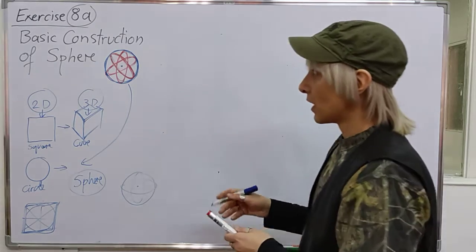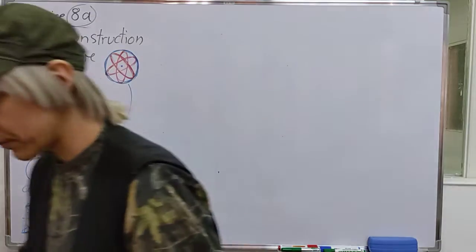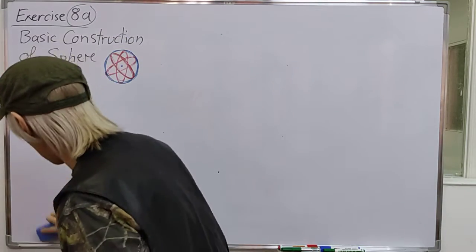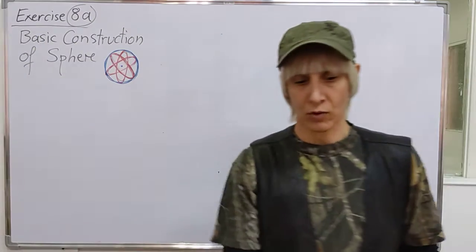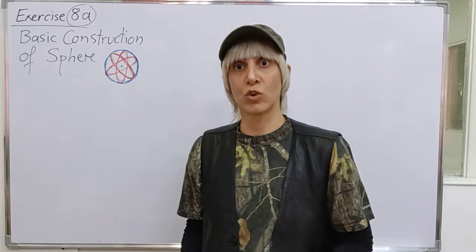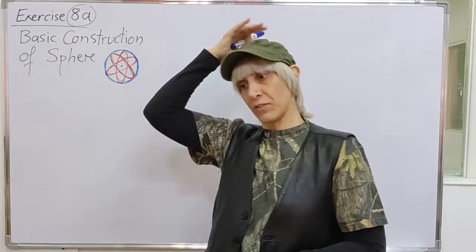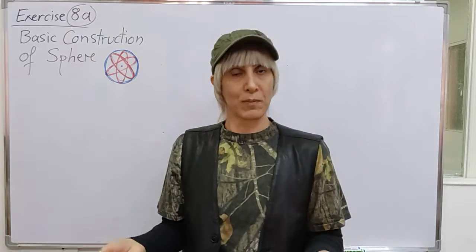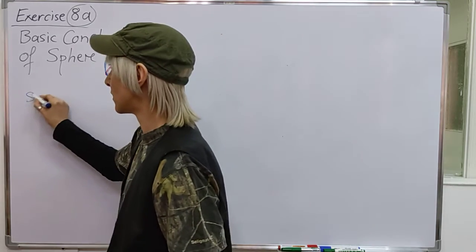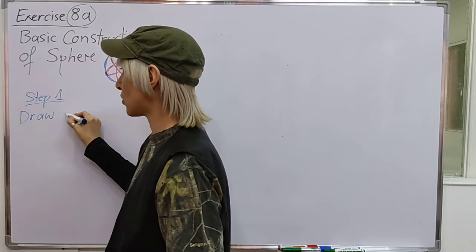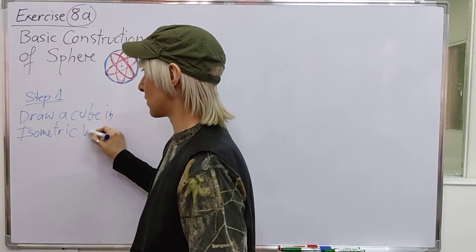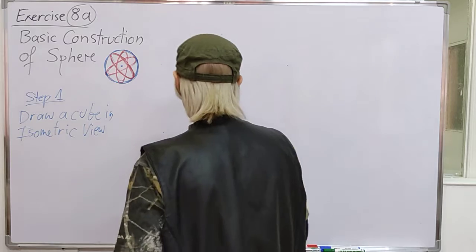So let me delete this. What are we doing today? Constructing a sphere. What do we need to do? The first step is to draw a cube. I advise you to draw the cube in isometric view. So step one: draw a cube in isometric view. Let's do that.